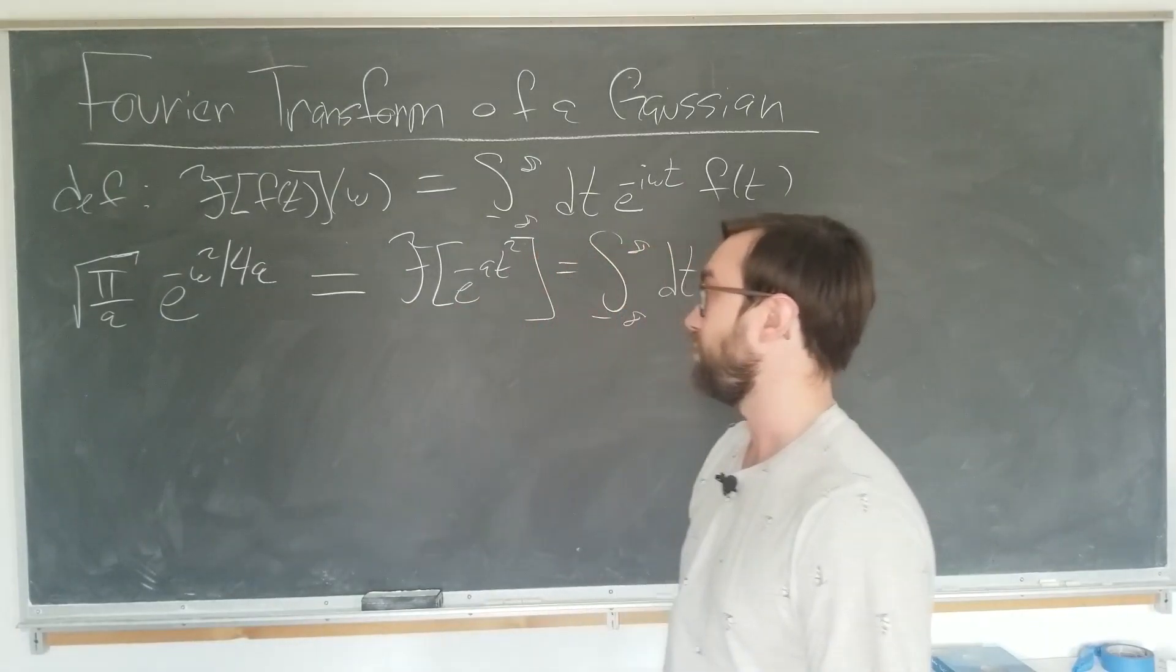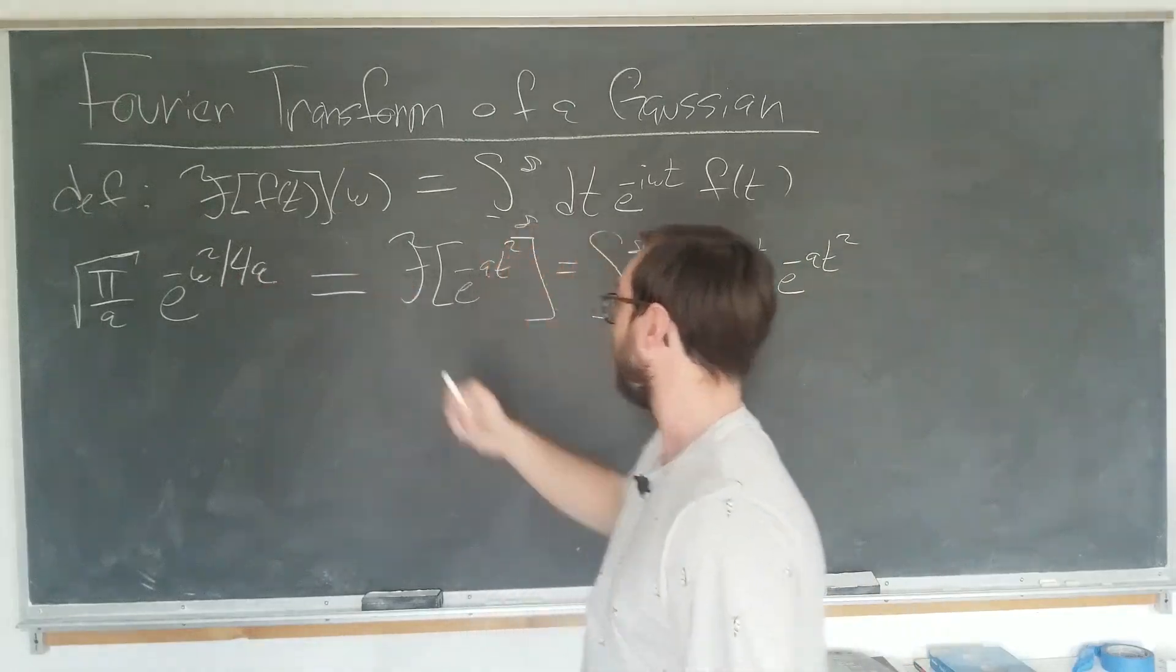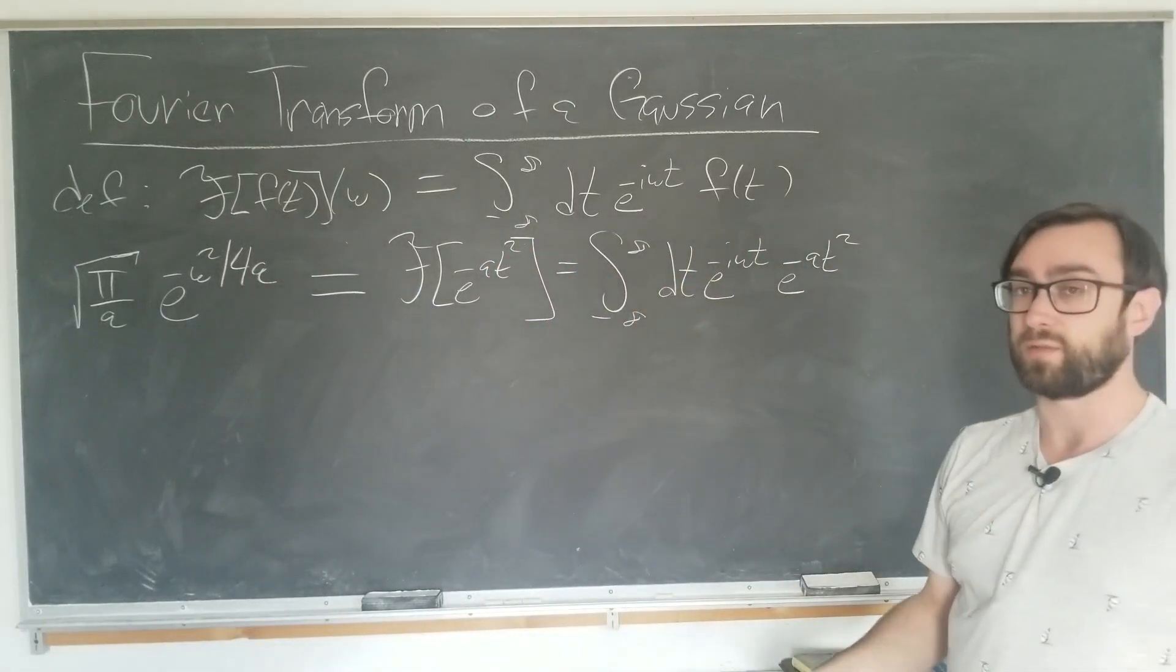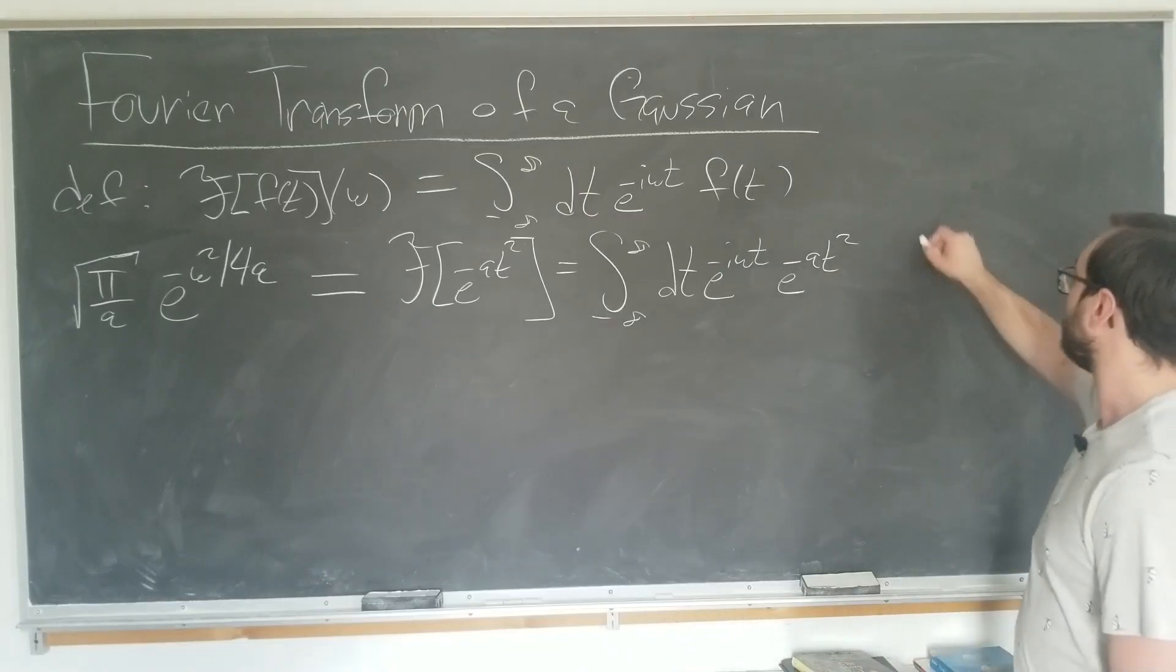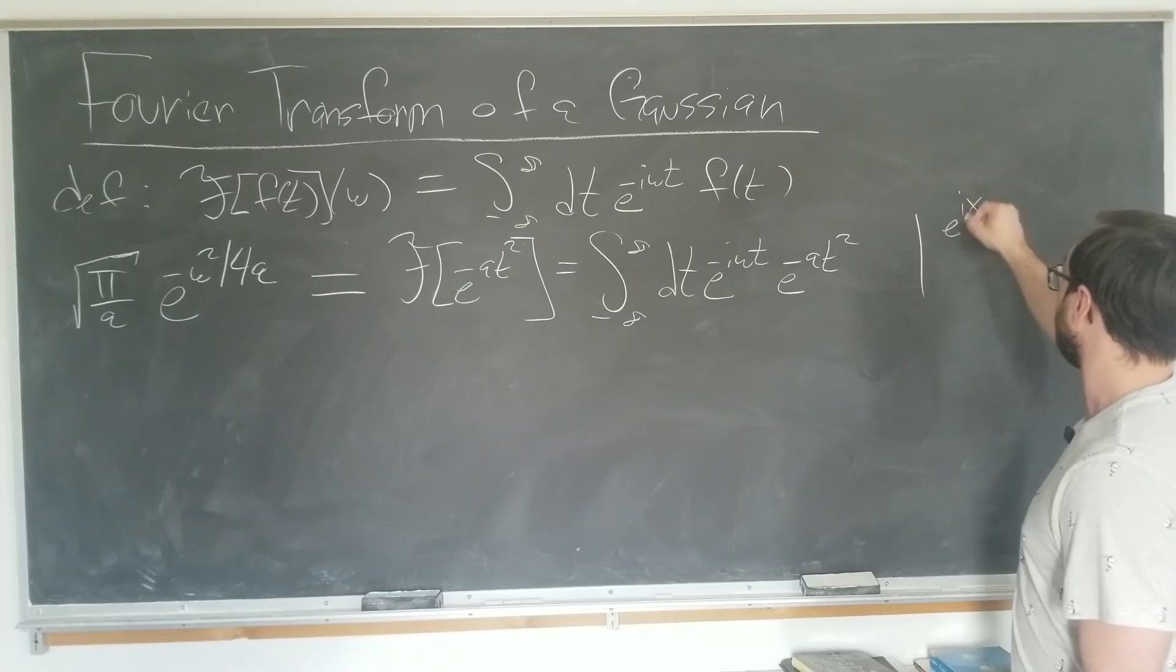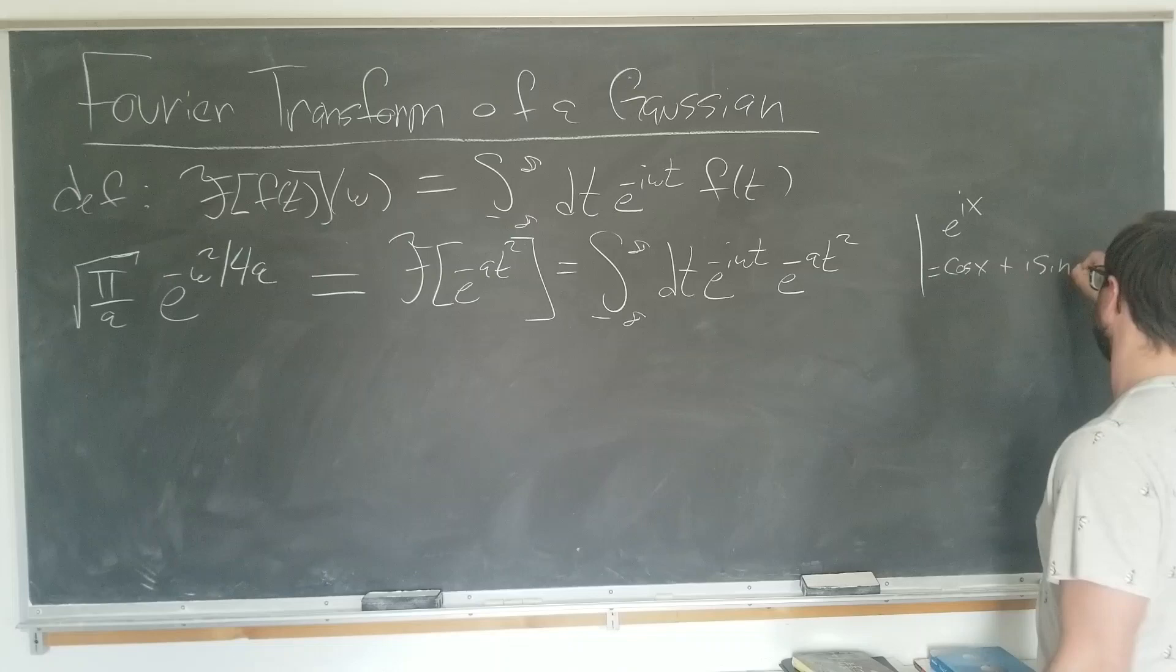The next thing that we want to do is use Euler's formula, which states that e to the ix is, of course, equal to cosine x plus i sine x. Elementary, high school result.